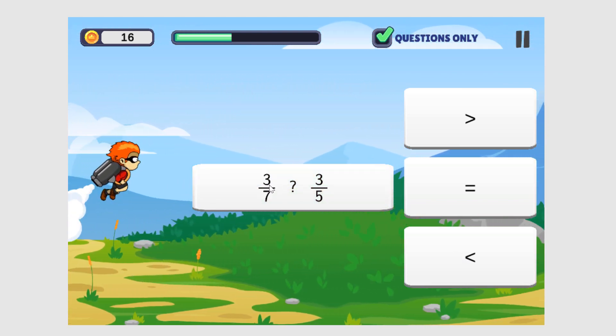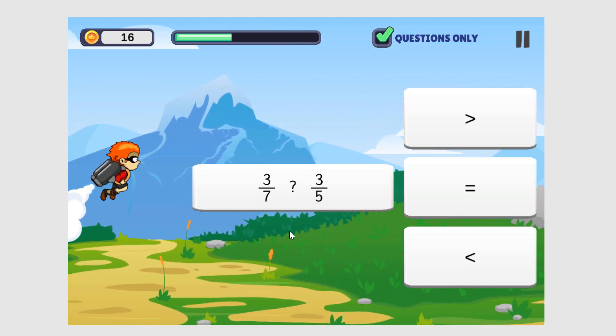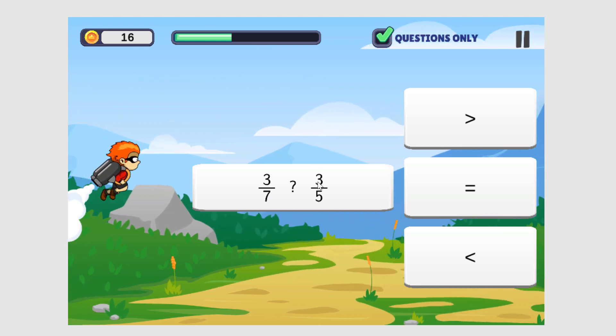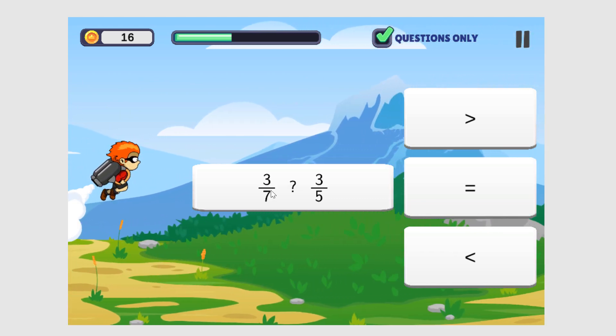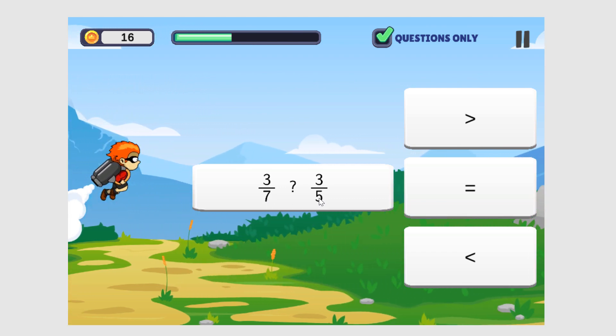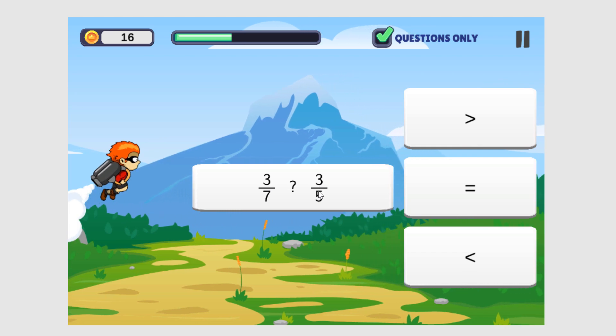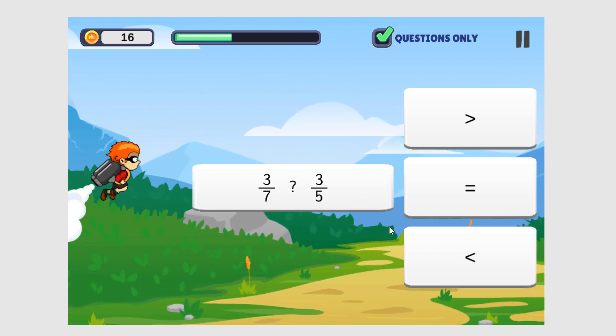Here we're comparing 3 sevenths and 3 fifths. So the numerators are the same, we have 3. And sevenths are 7 parts, which are much smaller than 5 parts. So the answer would be 3 fifths is greater. So 3 sevenths is less than.